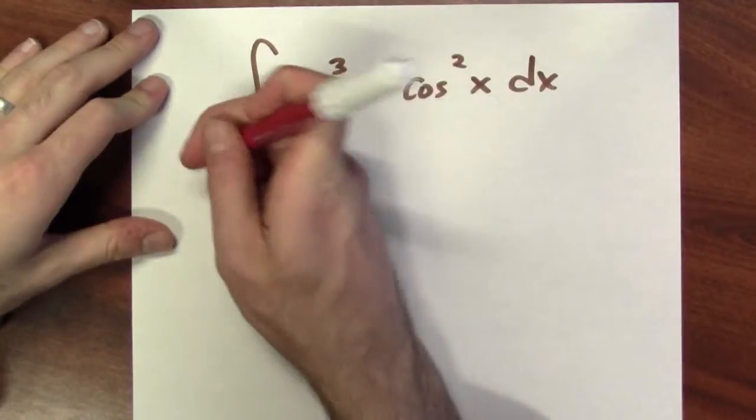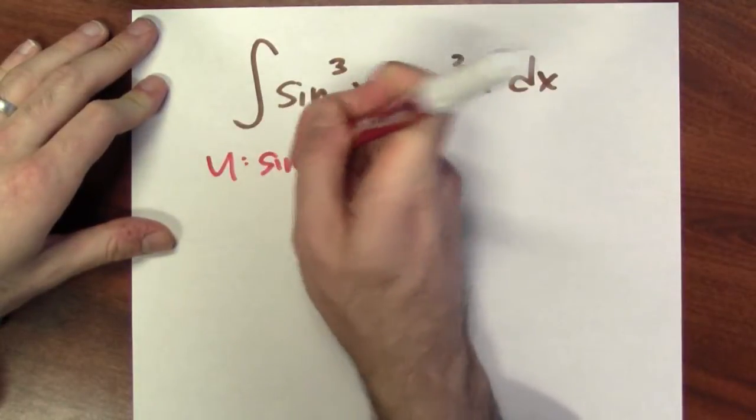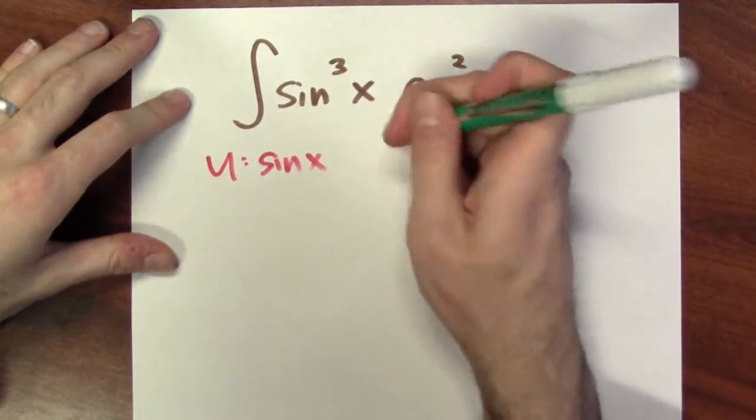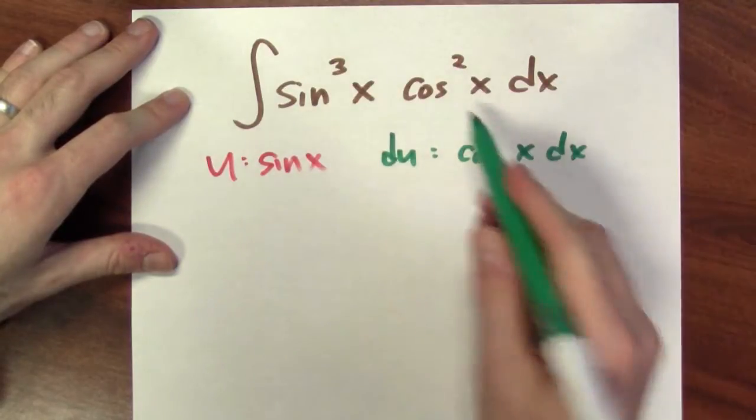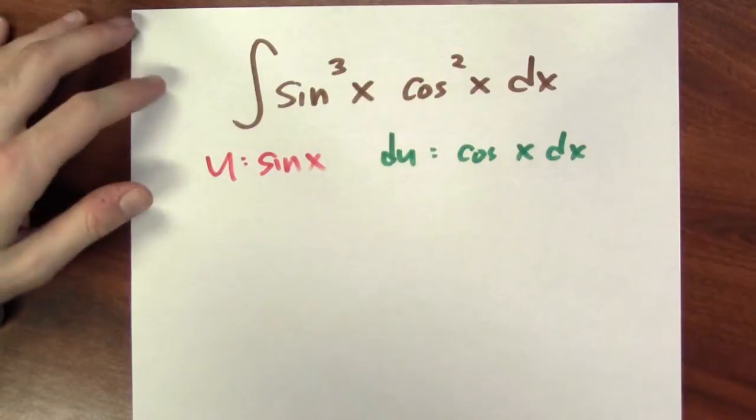Our first inclination might be to try to make a substitution. But rats, I mean, if u were sine x, then du would be cosine x dx, but I've got a cosine squared term there that I have to deal with.